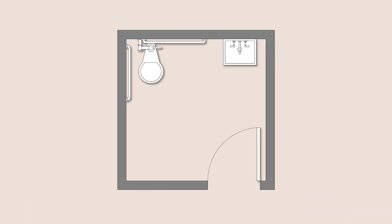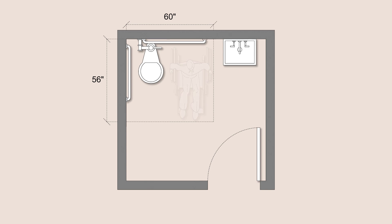The water closet must be positioned between 16 and 18 inches away from the sidewall, measured from the center line of the water closet. The surrounding clearance must be 60 inches, measured from the sidewall, by 56 inches, measured from the back wall.